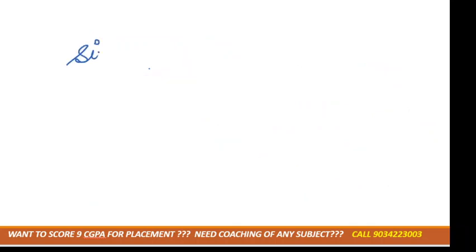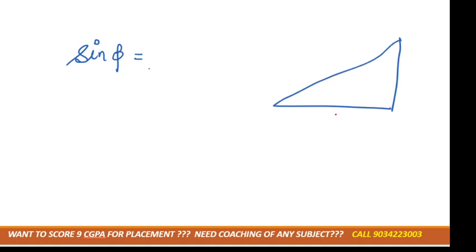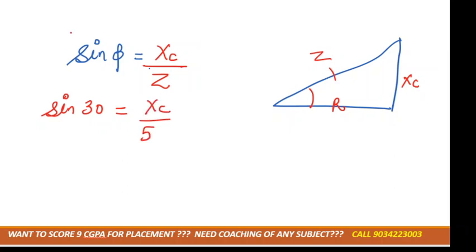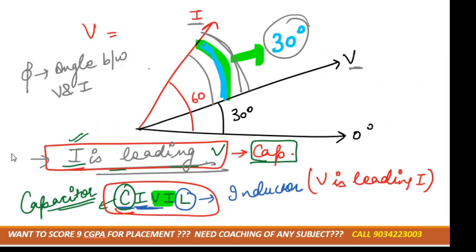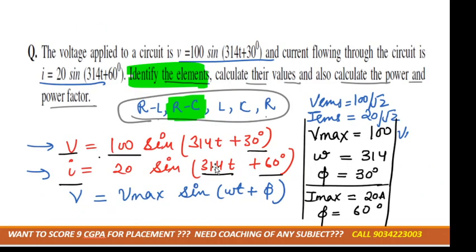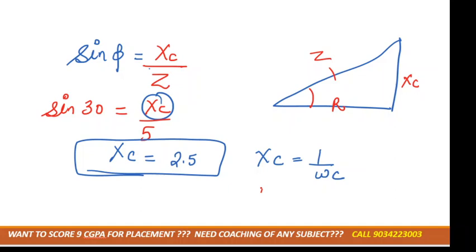From the impedance triangle — R, Z, and Xc — sin φ = Xc/Z. So sin 30° = Xc/5, giving Xc = 2.5 ohms. Using Xc = 1/(ωC), and ω = 314: C = 1/(314 × 2.5) = 127 microfarads.